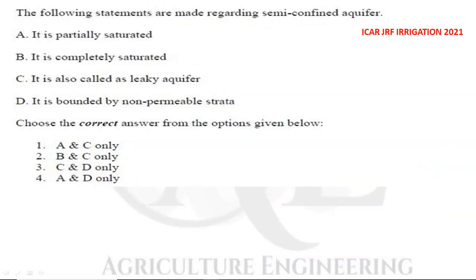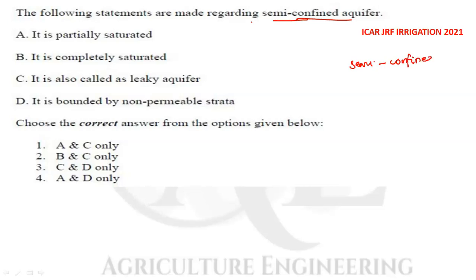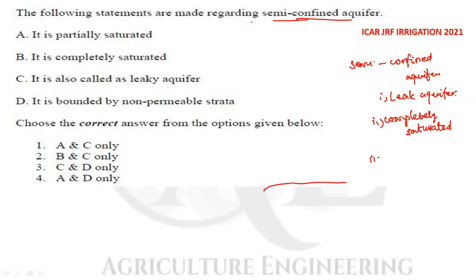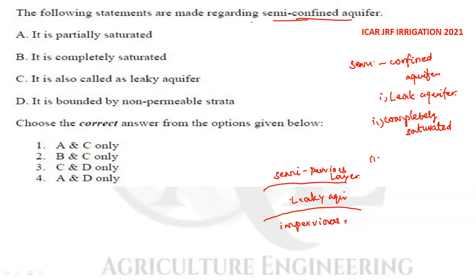The next question involves statements about semi-confined aquifers. A semi-confined aquifer is bounded above and below, where one boundary is impervious or semi-pervious.